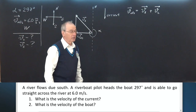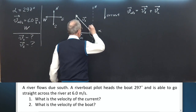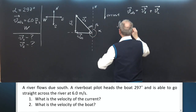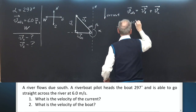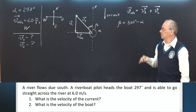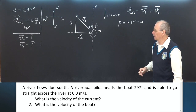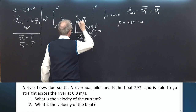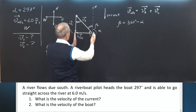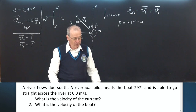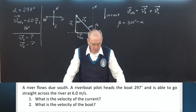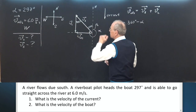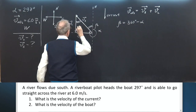Let's use a more convenient angle beta, which equals 360 degrees minus alpha. This angle is more convenient because it is an acute angle. The same angle appears here in the diagram, because we have two parallel lines and a transversal, and alternate interior angles between these two lines and the transversal are equal. So this angle is beta also.